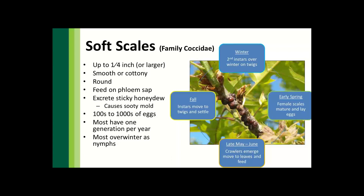A single soft scale can produce hundreds to thousands of eggs. They generally have only one generation per year, though depending on your climate you can have two generations or a generation and a half — we're seeing that become more prevalent as climates become warmer. Most of these overwinter as nymphs, and keep that in mind when we start talking about management strategies with horticultural oil.